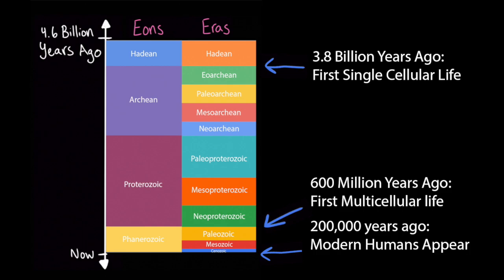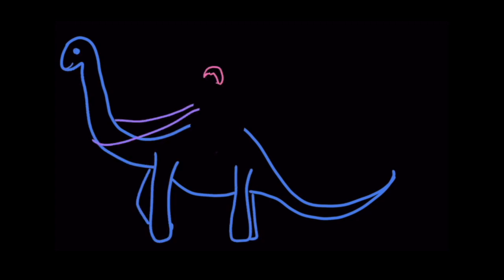In other words, it took a really long time for life to evolve into what it looks like today. We humans are very young in the grand scheme of the Earth's history. Now, if you'll excuse me, I'm going to go saddle and ride this brontosaurus. Let's go, Gingersnap! Hi-yah!